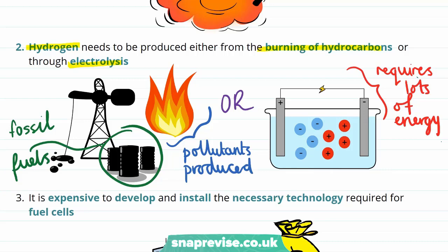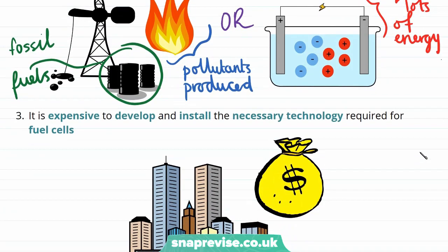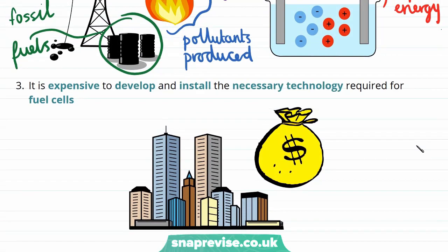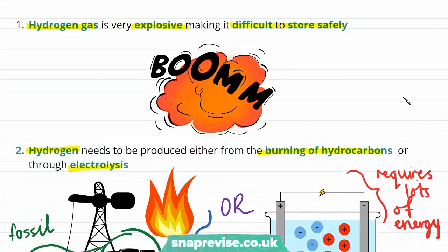Therefore, even though the hydrogen-oxygen fuel cell doesn't produce any pollutants when used, the production of the hydrogen for the fuel cell is likely to. The third disadvantage is that fuel cells are new technologies, and our current cars are designed to run on petrol or diesel. It can be expensive to develop and install the necessary technology required to use fuel cells, and it can be difficult to figure out how to store hydrogen safely.